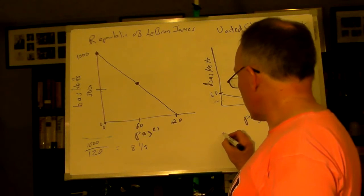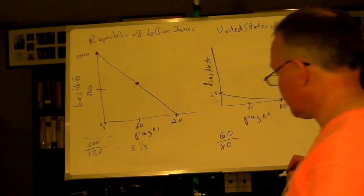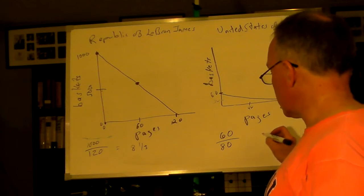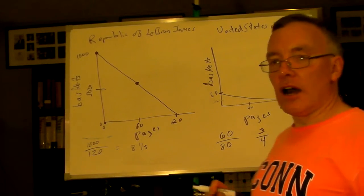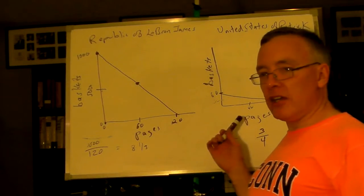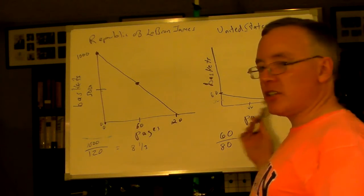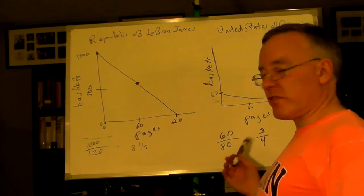And over here for Patrick, we'll put the baskets on the top and we'll put the pages on the bottom. And this obviously quickly resolves to 3/4. So, for every page that Patrick types, he's only giving up 3/4 of a basket.